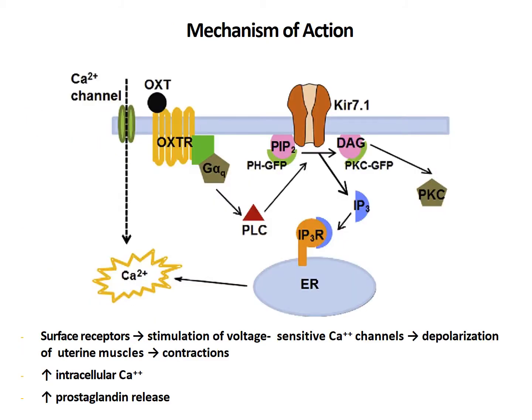The mechanism of action by which oxytocin acts in the body is through a G-protein coupled receptor IP3/DAG pathway, under which an increase in sarcoplasmic calcium ion leads to contractility of muscle. The surface receptors present on the uterus are governed by the oxytocin receptor, which is G-protein coupled, along with voltage-sensitive calcium ion channels, which get opened when oxytocin attaches to the surface receptor. The opening of voltage-gated calcium channels along with receptor activation causes depolarization of uterine muscles and thus contractions take place.